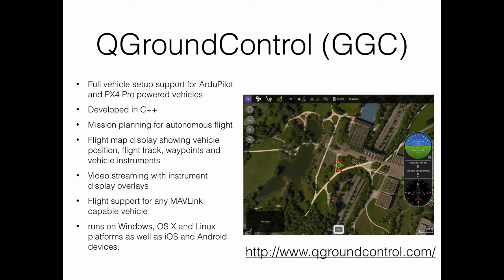QGroundControl has several functionalities, including defining and planning autonomous missions, full control of the vehicle, graphical visualization of the map, and location tracking of the vehicle through its GPS coordinates. It also provides support for video streaming and changing the internal parameters of the Autopilot, in addition to the calibration of the Autopilot's sensors.